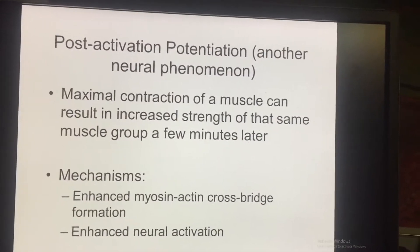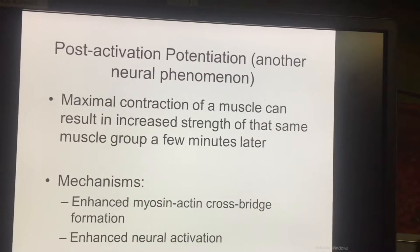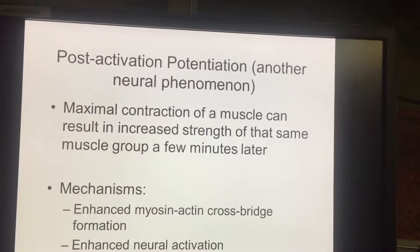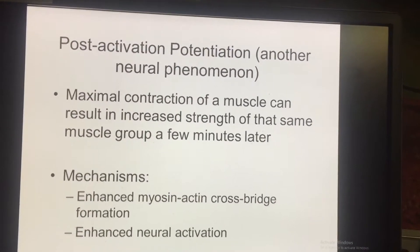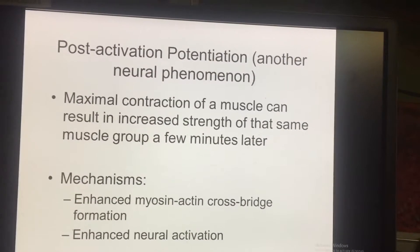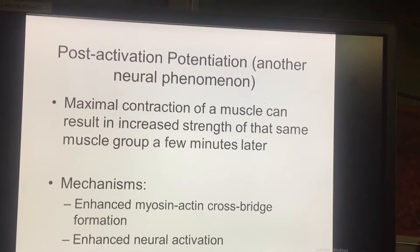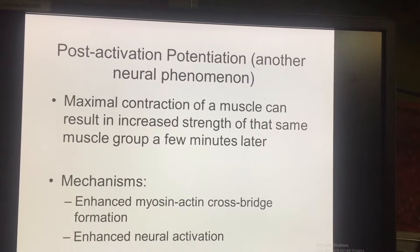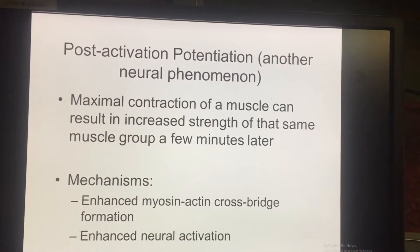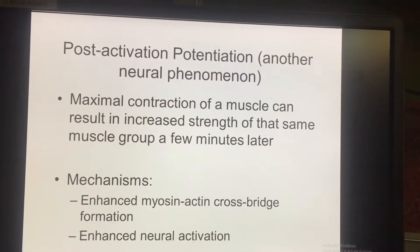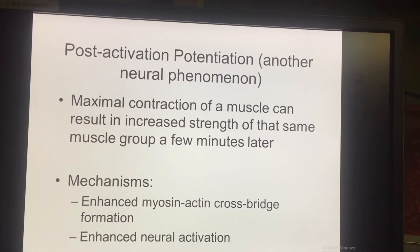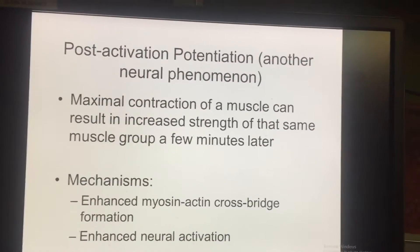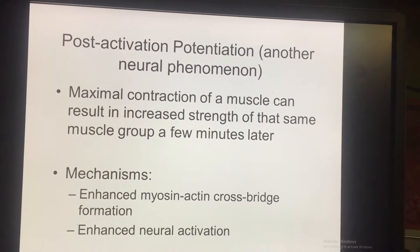Some of the possible mechanisms are kind of a bit of a mystery, but it might involve enhanced myosin-actin cross-bridge formation — something down in the muscle — or it might be something with the brain and enhanced neural activation. So if you do a maximal contraction of a muscle group, you're activating your brain and making your nervous system more excitable, and then when you do a performance a couple of minutes later, that performance is improved.